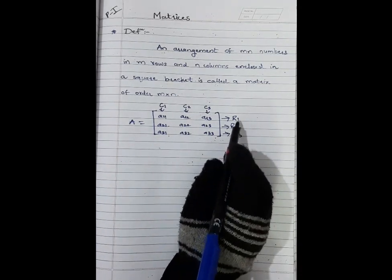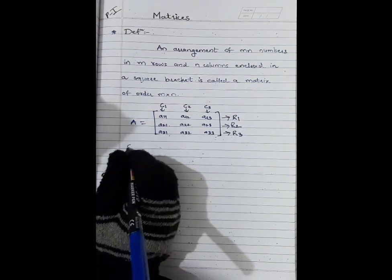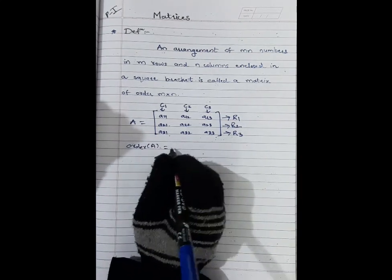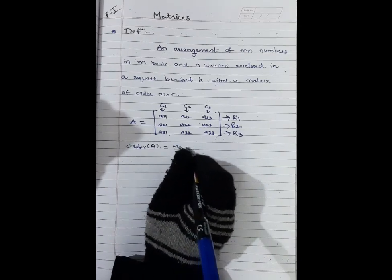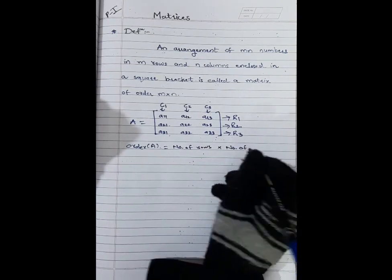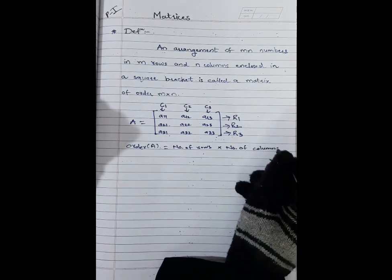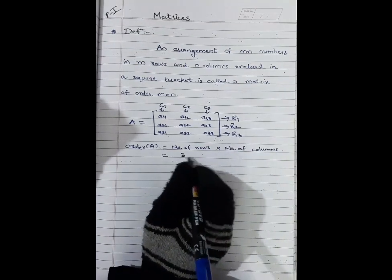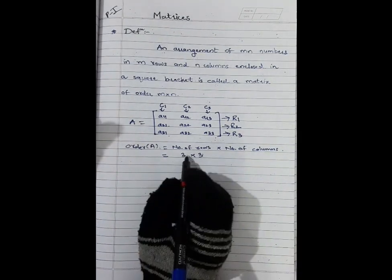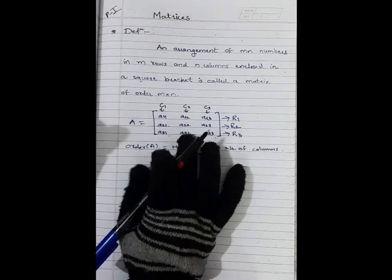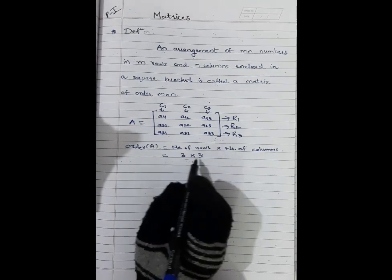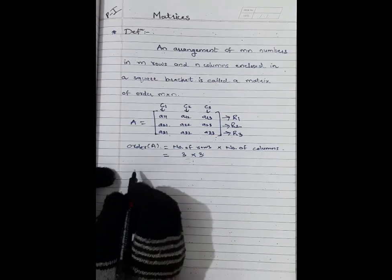In this matrix there are three rows and three columns. The order of a matrix is nothing but the number of rows multiplied by the number of columns. In this matrix there are three rows and three columns, so the order of matrix A is 3×3, meaning it contains nine elements. Order is always written in the format rows cross columns.